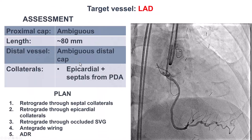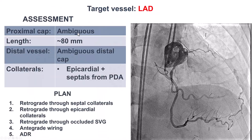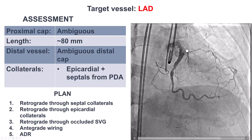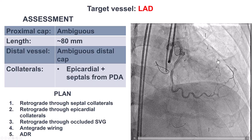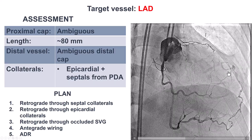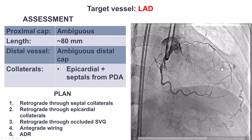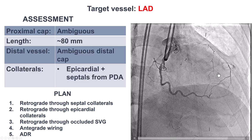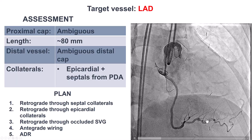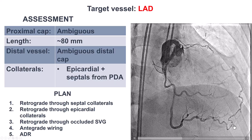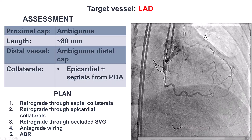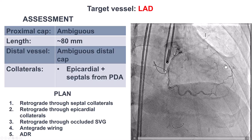What we have here is an osteo-LAD CTO with ambiguous proximal cap. There is a long lesion length — essentially all the way from the ostium of the LAD to the middle LAD. In the distal vessel, we do see a bifurcation with another branch coming off. There are collaterals from the septum, from the right coronary artery, and a distal epicardial collateral. There's also the possibility of going through the occluded saphenous vein graft to the LAD.